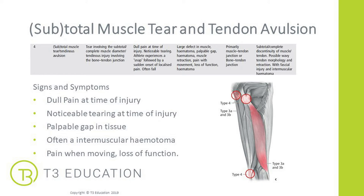A subtotal muscle tear or tendon avulsion is where the muscle has completely torn or the tendon has come away from the bone. Signs and symptoms include dull pain at the time of injury, noticeable tearing, and a visible and palpable gap in the tissue. There's often an intermuscular haematoma deep within the tissues, pain on movement and significant loss of function. Clients may describe the sound of a snapping or popping at the time of injury, especially with larger tendons like the Achilles.